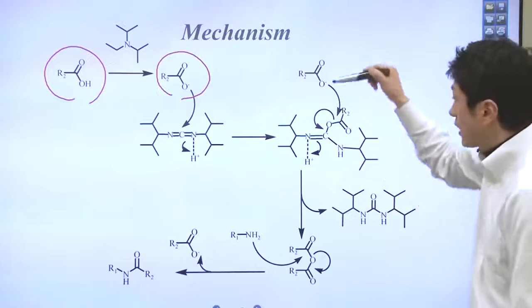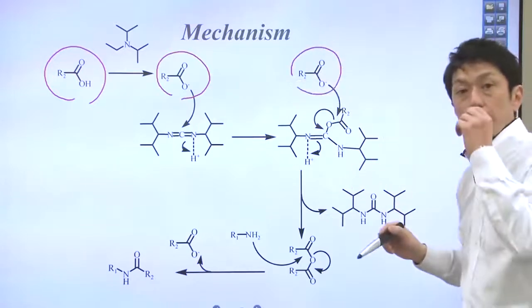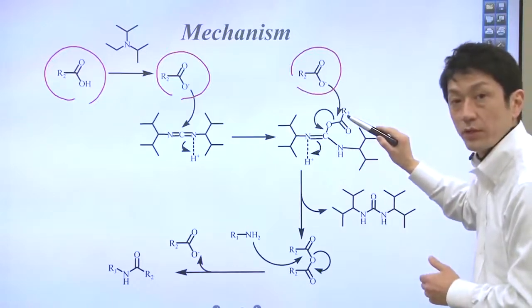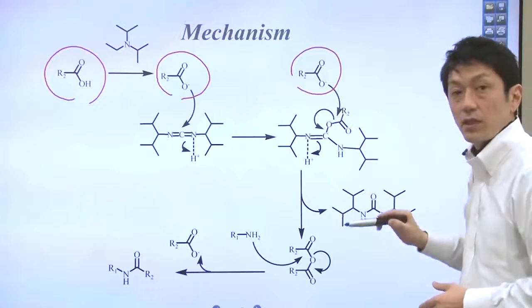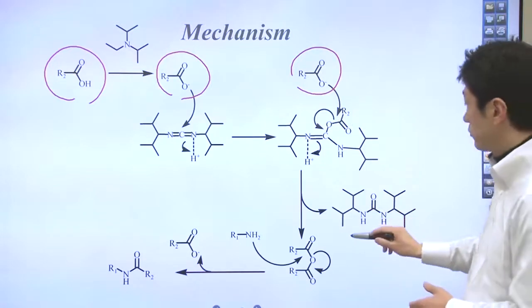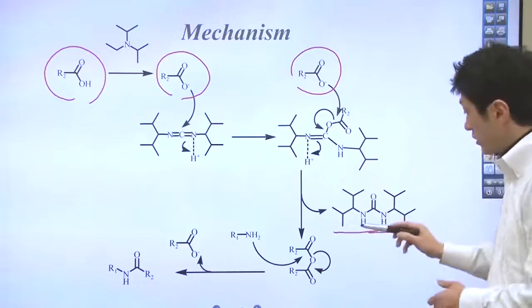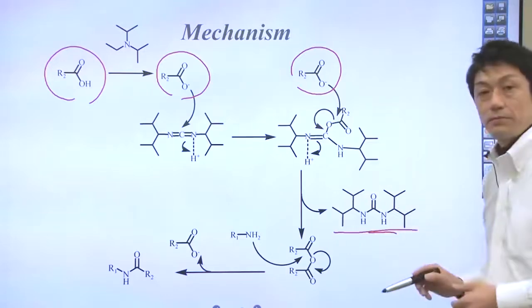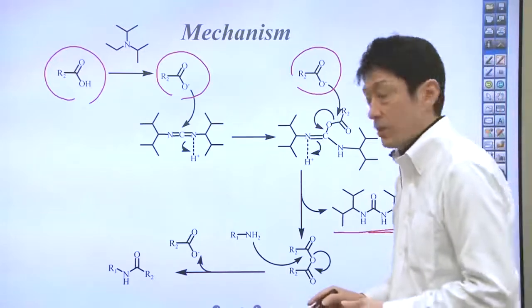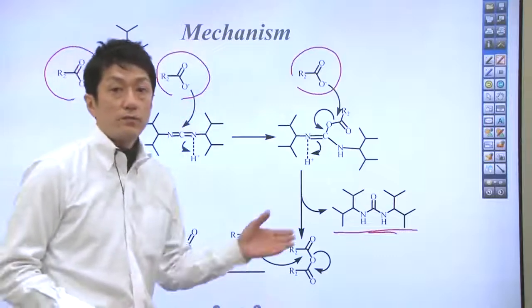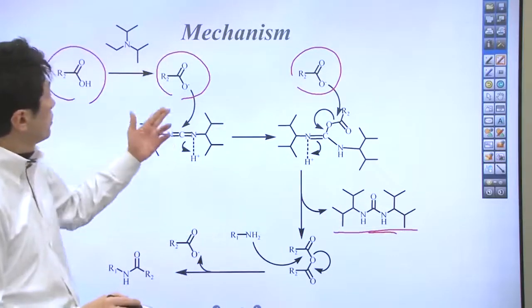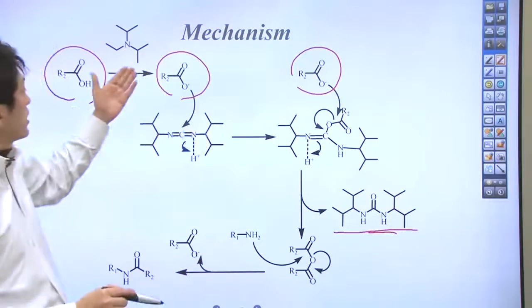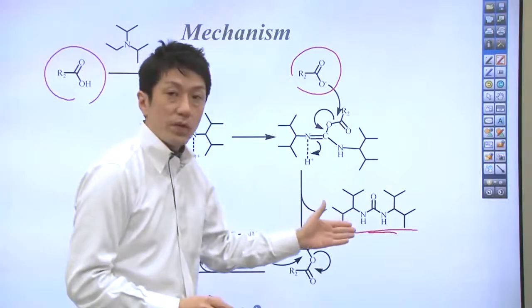The second acid reacts with another electron-deficient carbon right here to release the urea molecule. So this NHCO, NH part is called a urea. As a result, the condensation reagent has taken a water molecule from the two carboxylic acids. That's why it became a urea.